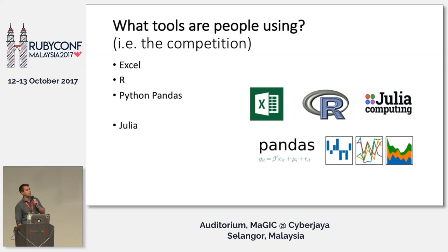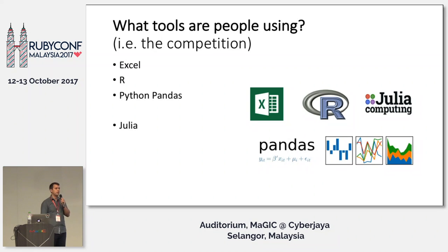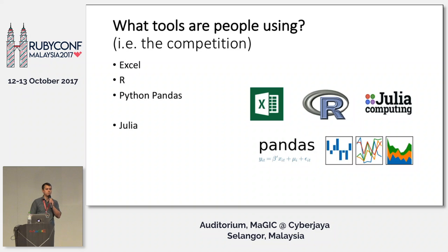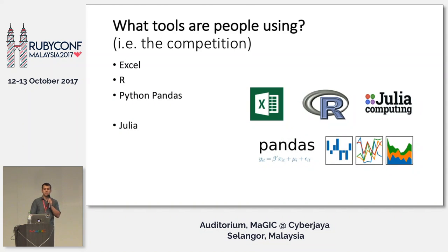An interesting newcomer is Julia. It's basically a language purpose-written for high-performance computing, while still hopefully having all the nice things that we like about scripting languages like Ruby. I've not seen it used in a production environment for this yet — it's quite recent. If anybody has, I'd love to hear about it.